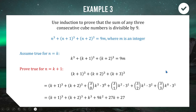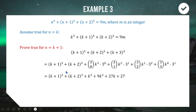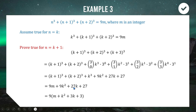Expanding the full expression (k+1)³ + (k+2)³ + (k+3)³ and simplifying, we get k³ + 9k² + 27k + 27 (plus the (k+1)³ and (k+2)³ terms). Since k³ + (k+1)³ + (k+2)³ = 9m by our assumption, we substitute 9m for those three terms. We're left with 9m + 9k² + 27k + 27, and factorizing out nine gives 9(m + k² + 3k + 3). The expression equals nine times something, so it's true for n = k+1 and therefore for all n ≥ 1 by induction.